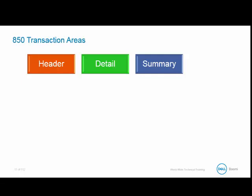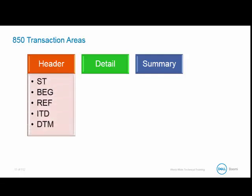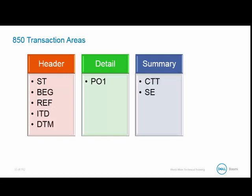For an 850, the following segments are required for the header: ST, which is the transaction set header; BEG, the beginning segment for the purchase order; REF, the reference identifier; TDD, the terms of sale or deferred terms of sale; and DTM, the date time reference. E01, or the baseline item detail, is the only mandatory segment in the body of an 850. The summary total has two required segments: CTT, the transaction totals, and SE, the transaction set trailer. All other data passed into the file is optional.